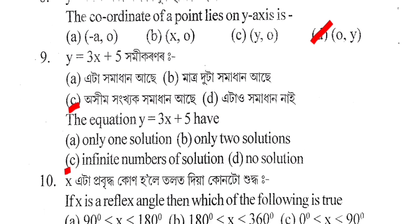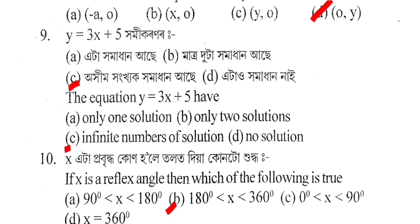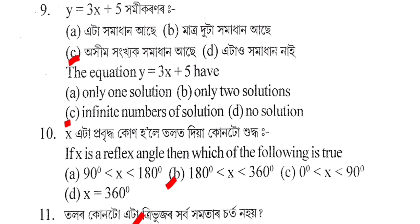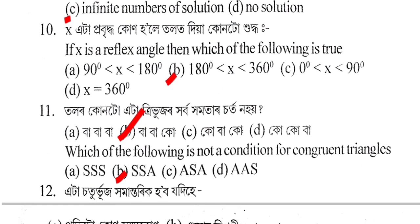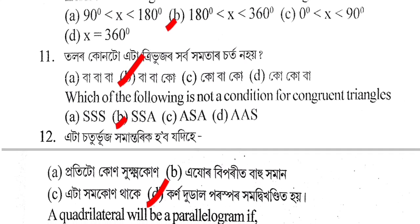Next question: Given y is equal to twice x plus 5, find the value. The correct answer is Option B.